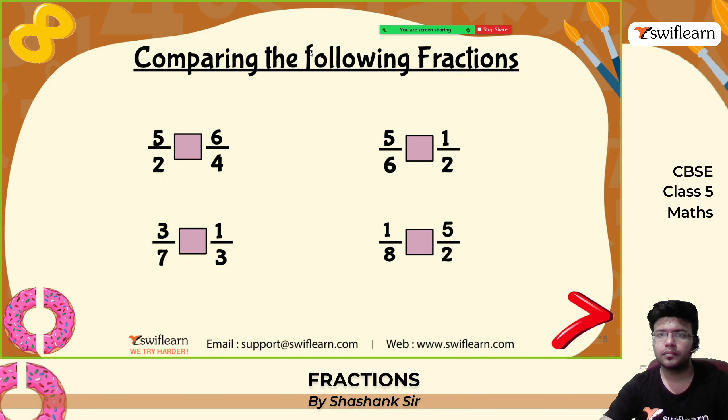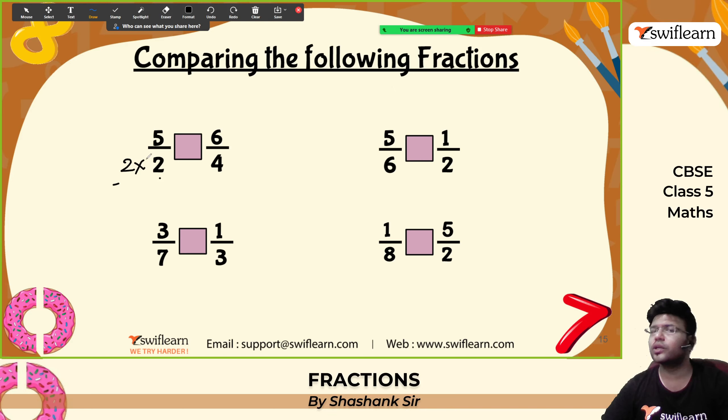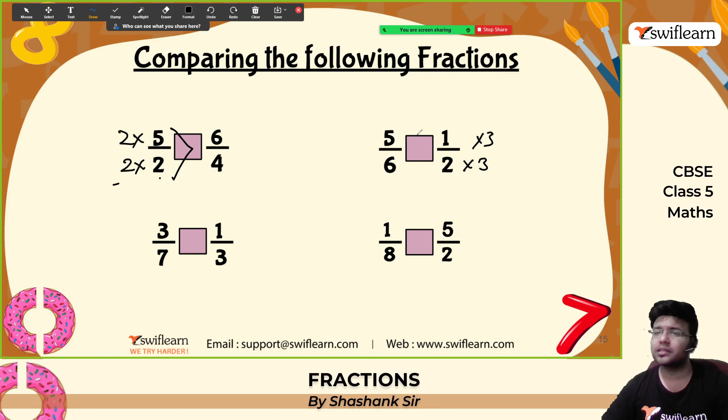Compare the following fractions. First pair: denominators are 2 and 4, LCM is 4. Multiply 5 by 2 to get 10; the other is 6 by 4. So 10 by 4 is greater. Next: make denominator 6 by multiplying by 3; we get 3 by 6 and 5 by 6 — 5 by 6 is greater. Next: LCM of 3 and 7 is 21. Multiply accordingly — numerators become 9 and 7; so 9 by 21 is greater. Last: LCM is 8, numerators become 20 and 1 — so 20 by 8 is greater.